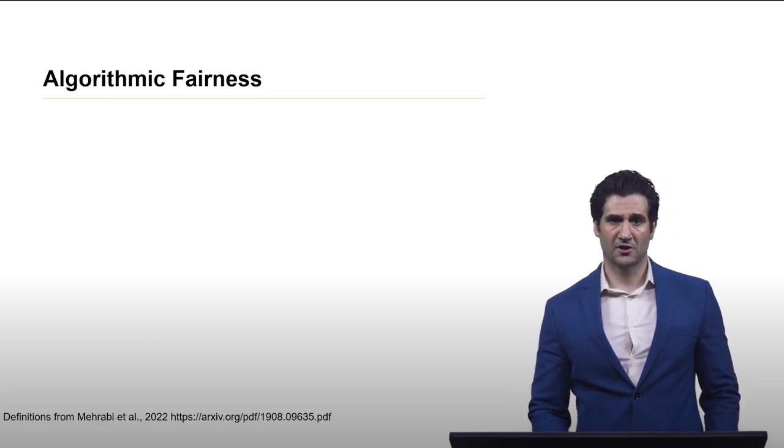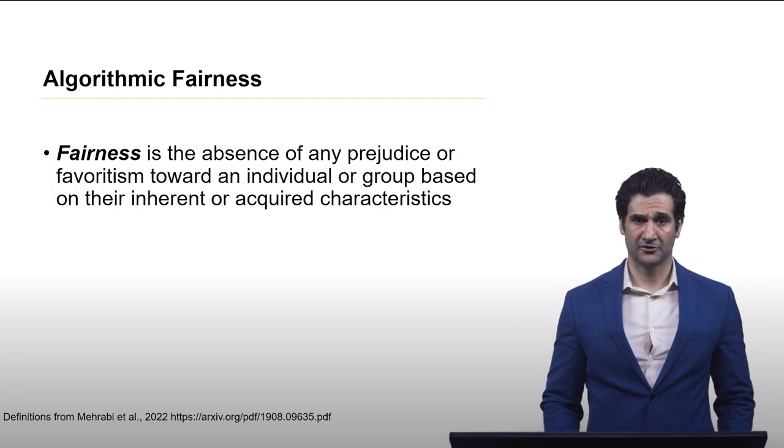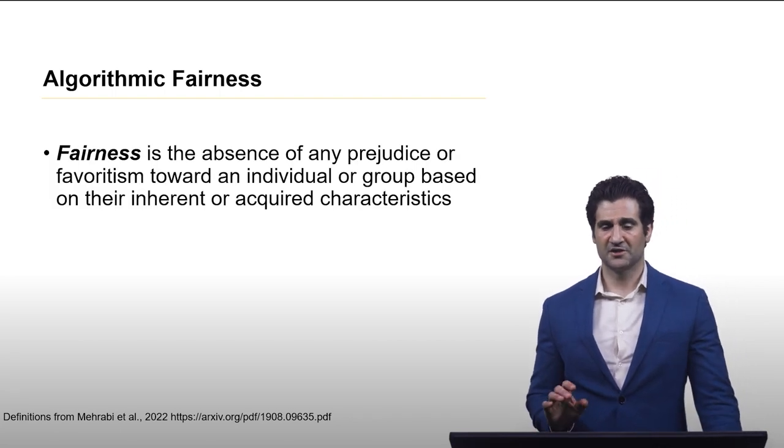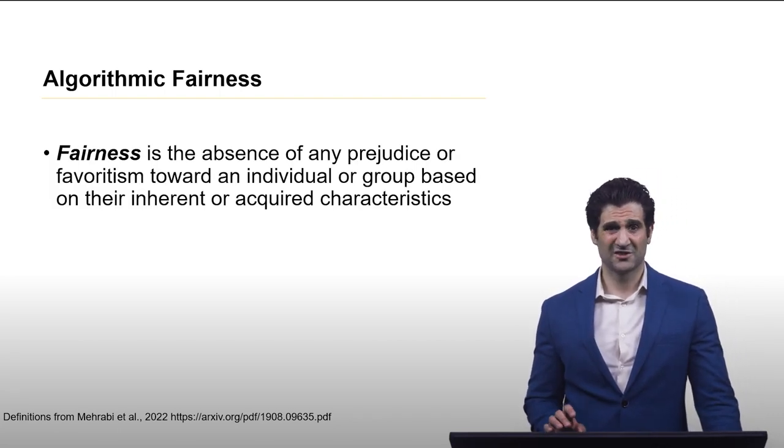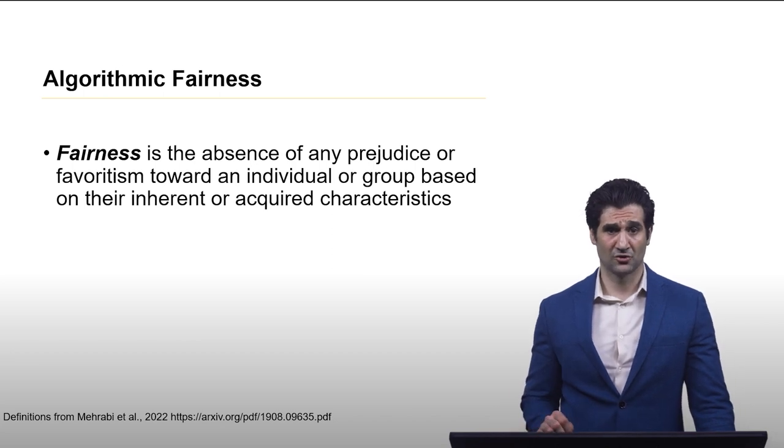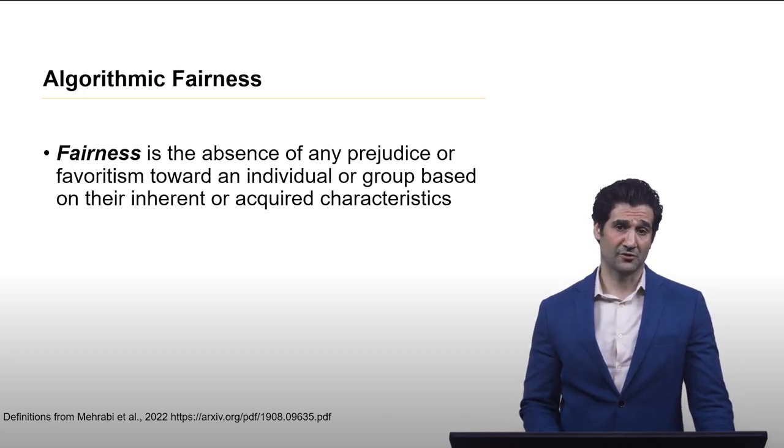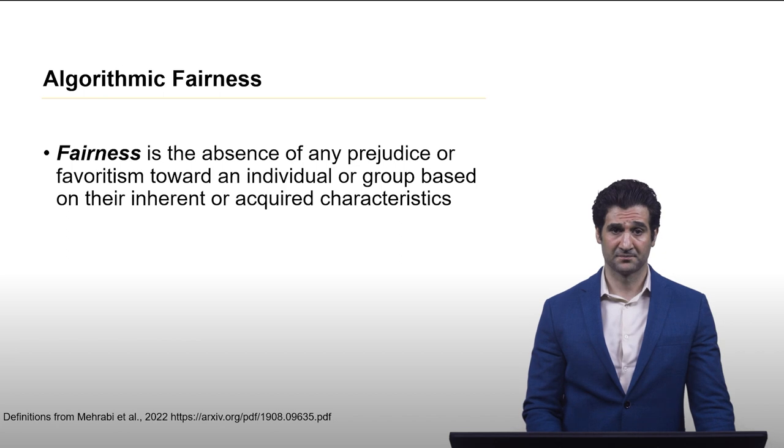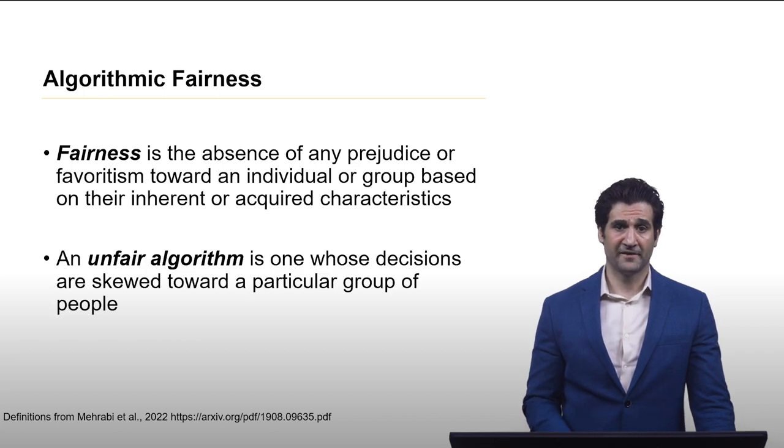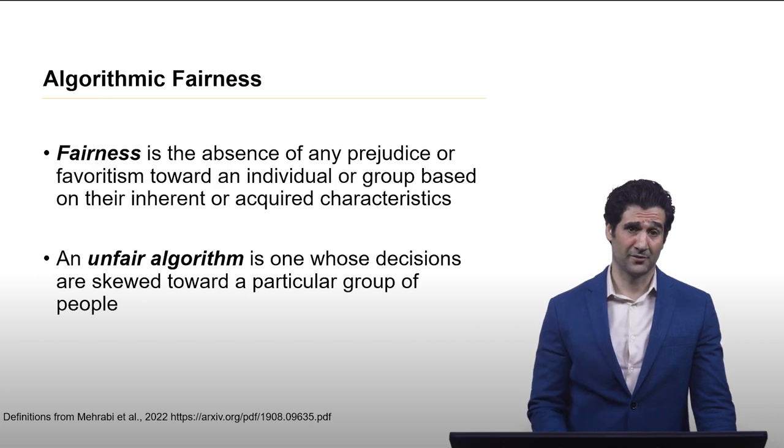First we're going to talk about algorithmic fairness. Fairness is the absence of any prejudice or favoritism toward an individual or group based on their inherent or acquired characteristics. An unfair algorithm is one that makes skewed decisions toward a particular group of people.